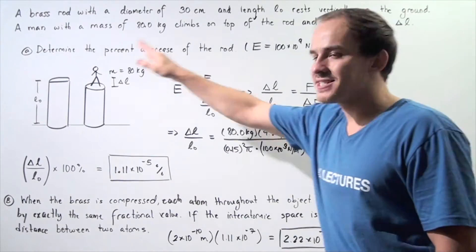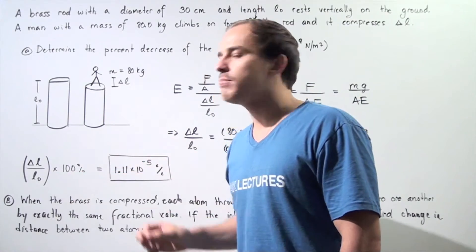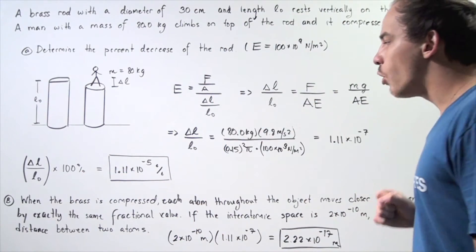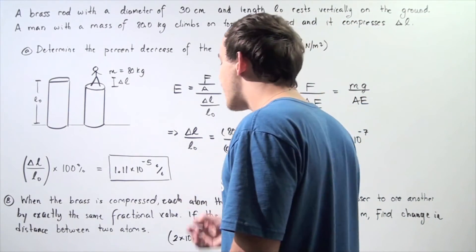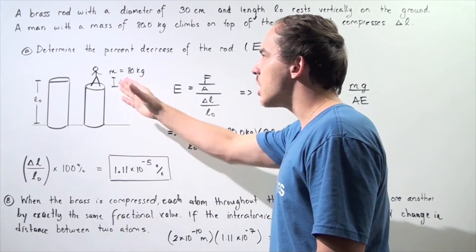and to get the percent decrease of the rod, we simply take this quantity, and we multiply it by 100%. And we simply get 1.11 times 10 to the negative 5%. So, this is our percent decrease of the rod.